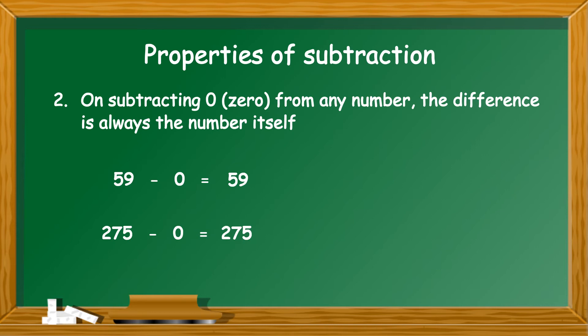But if we try to interchange the numbers and write 0 minus 59 is equal to 59 or 0 minus 275 is equal to 275, both these statements are incorrect.